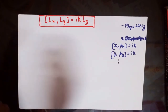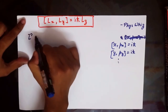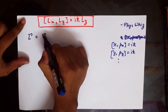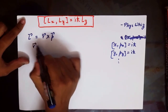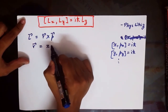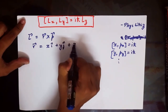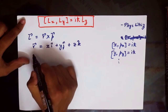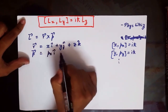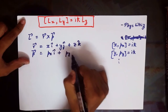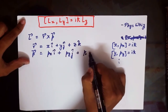So let's begin. The angular momentum is given as the vector product between the position operator and the momentum operator. The position operator can be written as x̂i + ŷj + ẑk, and similarly the momentum can be written as px·i + py·j + pz·k.